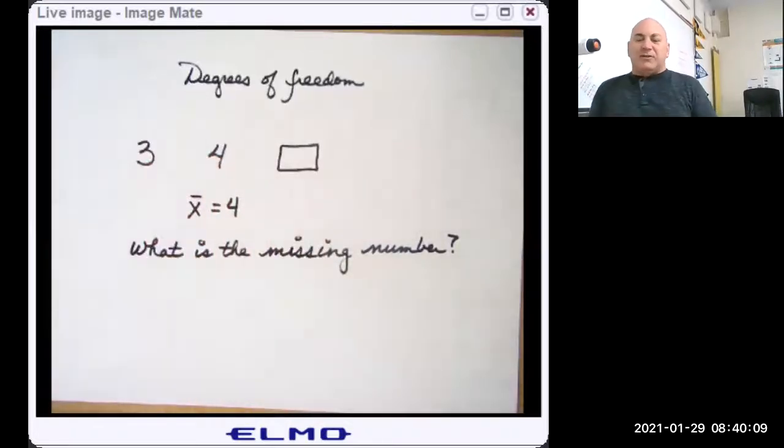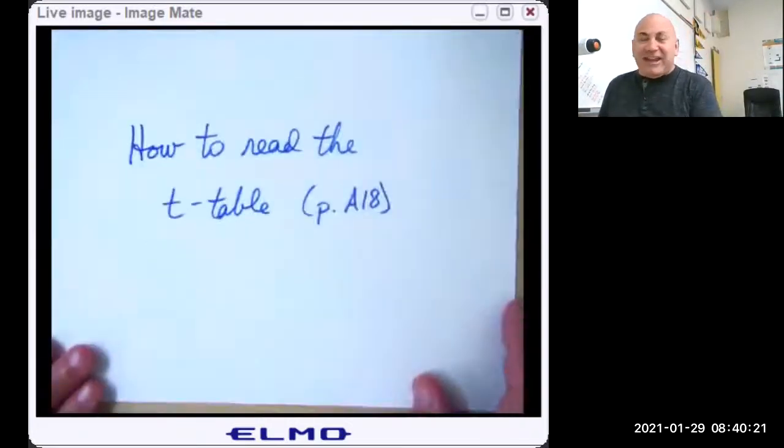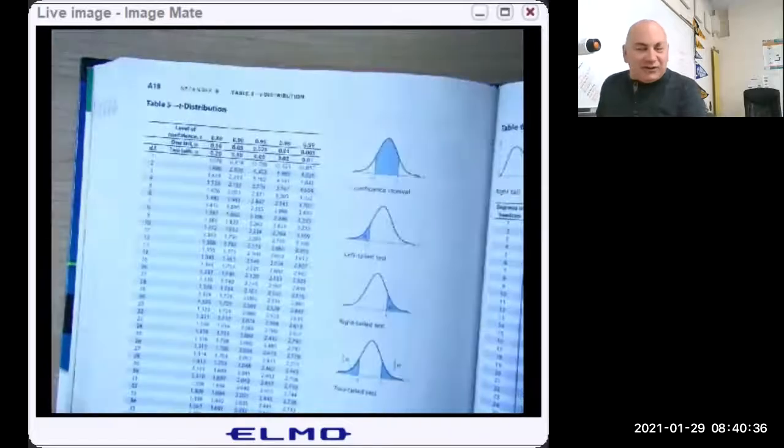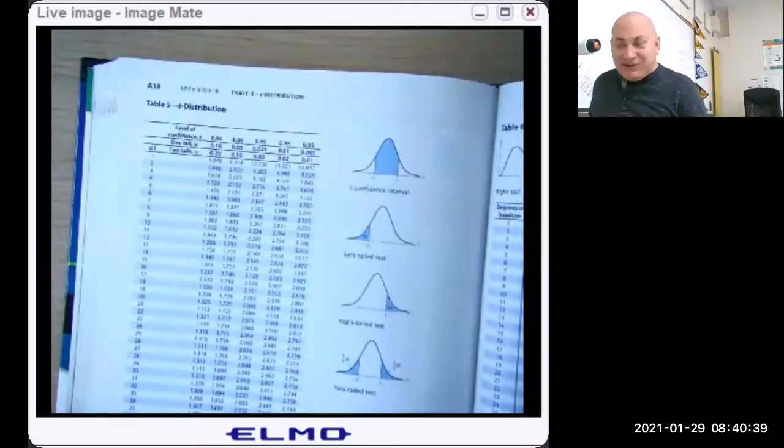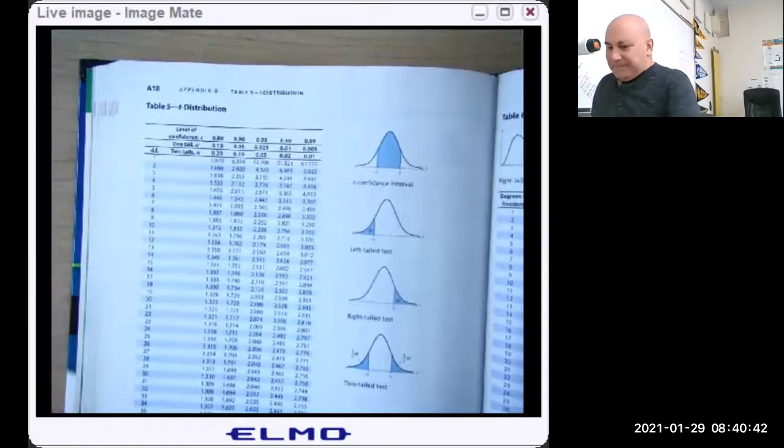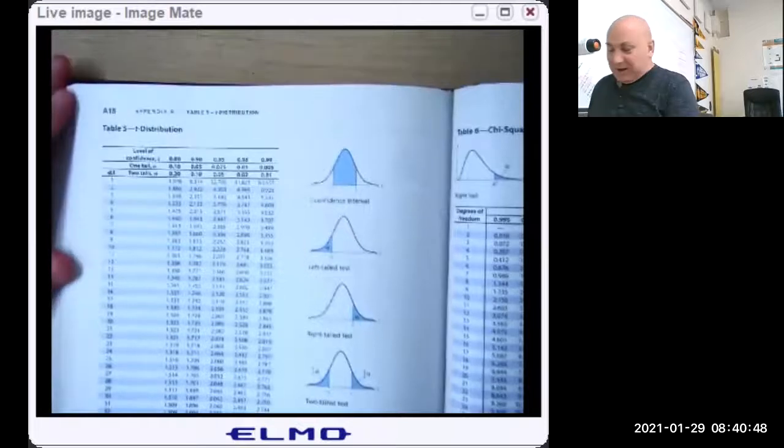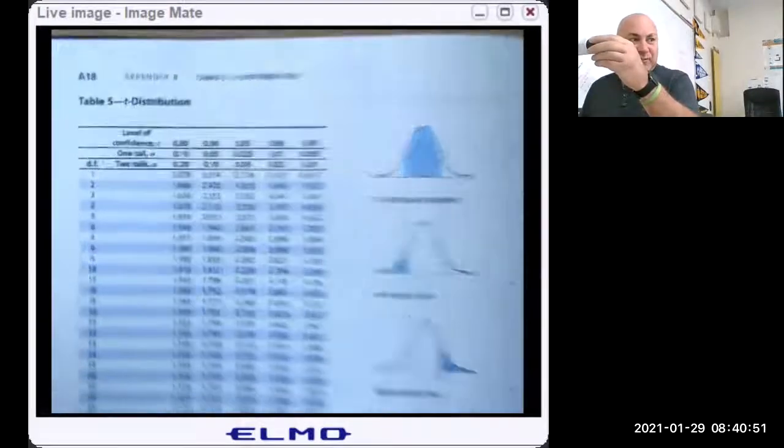Now later on, we'll see some examples where degrees of freedom is not n minus one. We're not going to worry about that right now. So let's turn to page A18 and learn how to read the T table. Nice thing about the T table is that there's only one page.